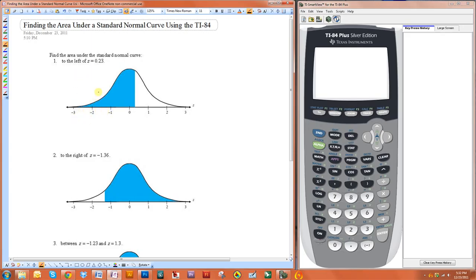In the first example, we want to find the area under this standard normal curve that is to the left of z equals 0.23. So we're looking for this area in here.